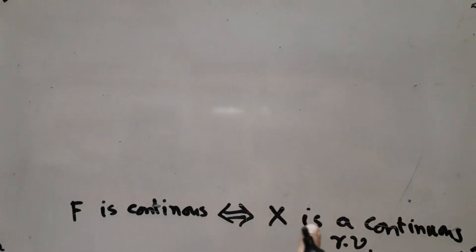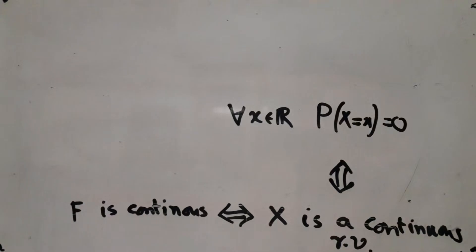If this holds, in that case we have another equivalent condition: probability X taking any given value little x equals zero. We have already learned these two concepts in probability 1 course.